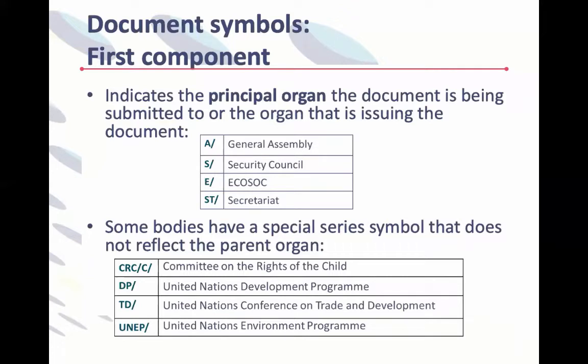The first component of a document symbol tells you the principal organ. When you see an 'A,' you're looking at a General Assembly document. 'S' is a Security Council document. ECOSOC is indicated with 'E,' and Secretariat with 'ST.' Document symbols are a little like a language — there are rules and exceptions. Some bodies have special series symbols that don't reflect their parent organ; the CRC (Committee on the Rights of the Child) is under the General Assembly but documents start with CRC. UNDP is 'DP' while the UN Environment Program is 'UNEP.'